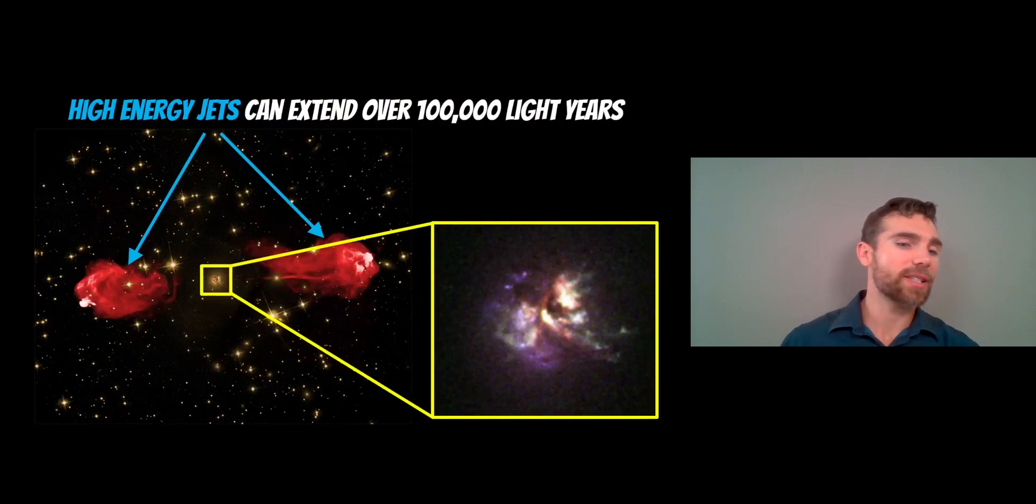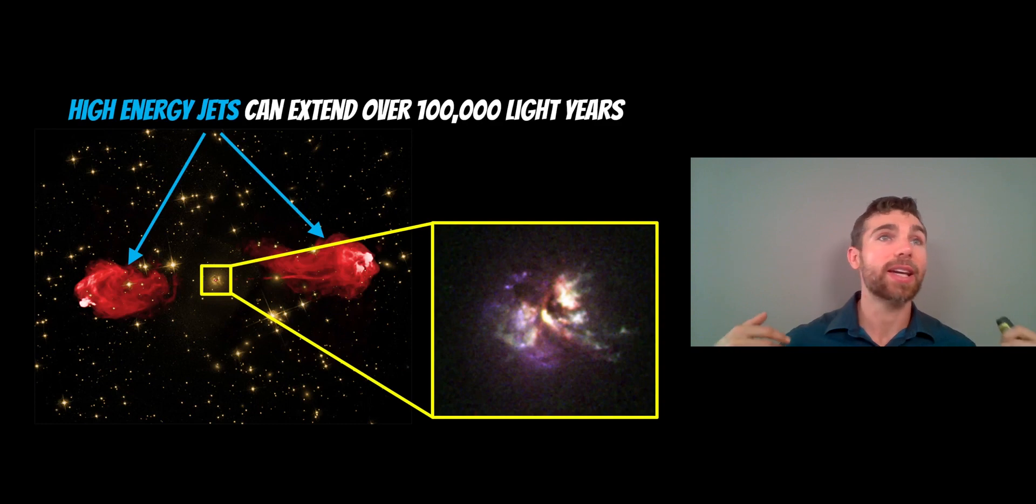These jets can extend for hundreds of thousands of light years. The galaxy in the central part is very small in comparison to the jets themselves. The jets are normally in the radio part of the spectrum. If you took an optical image, you wouldn't see the jets—it might just look like a normal galaxy. But look in a different part of the spectrum and you will see these enormous jets, which are a significant fraction of the total luminosity or energy given off by that galaxy.